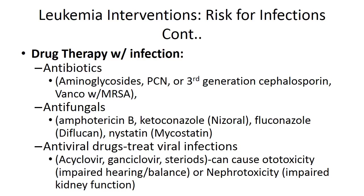If patients develop an infection, further drug therapy includes antibiotics, antifungals, or antiviral drugs. Antibiotics are often given as broad-spectrum agents such as aminoglycosides, penicillins, or third-generation cephalosporins. Vancomycin may also be used to help prevent or treat MRSA until the specific organism and sensitivities are identified. Antifungals such as ketoconazole, fluconazole, nystatin, and amphotericin B are used especially for candidiasis or yeast infections.